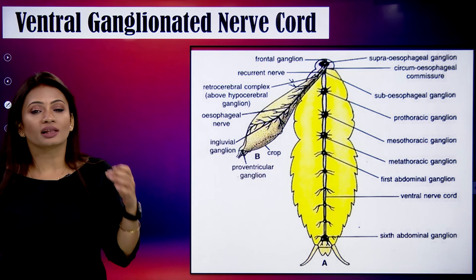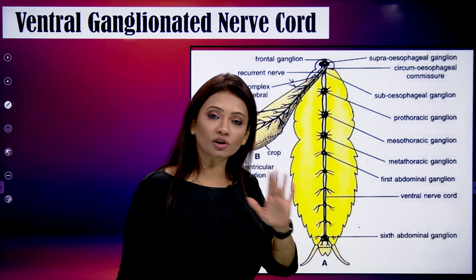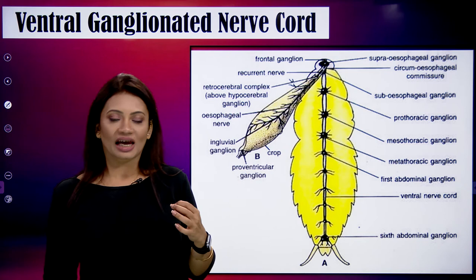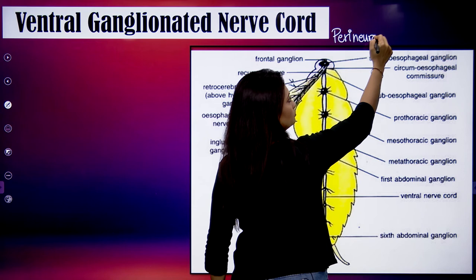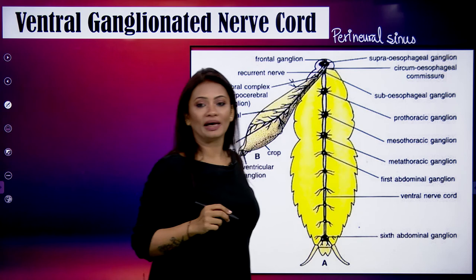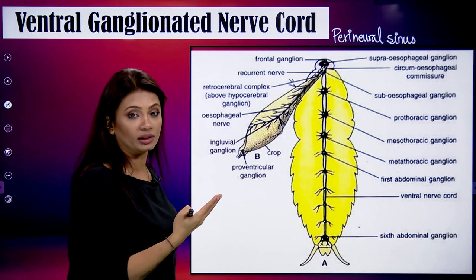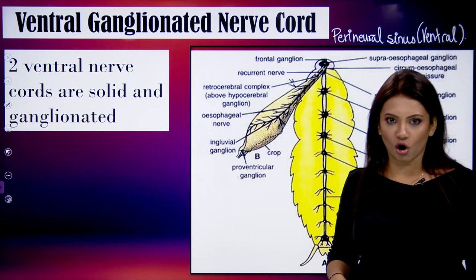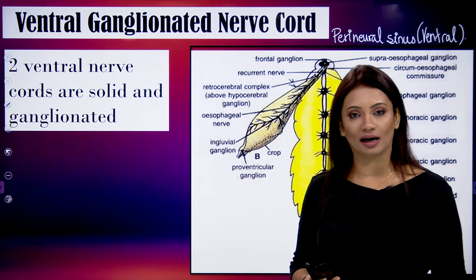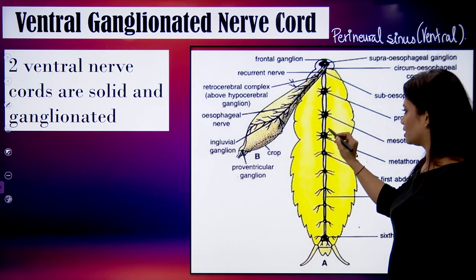The second part of the central nervous system is the ventral ganglionated nerve cord. This whole nerve cord is situated in the perineural sinus — the sinus completely on the bottom side, also called the ventral sinus. The ganglionated nerve cord is made up of two cords running parallel to each other.